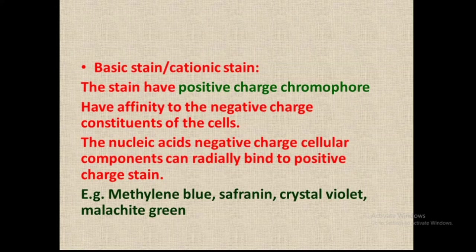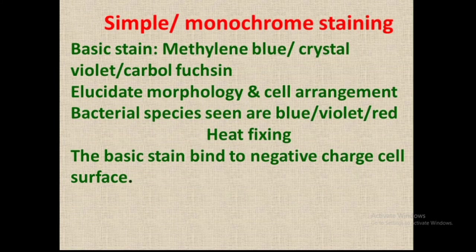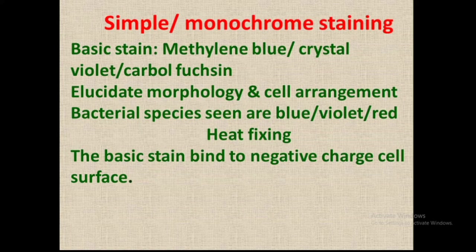Now let us see the types of staining. First is simple staining, also known as monochrome staining. This technique is useful to observe the morphology and cell arrangement of microorganisms. The basic stain — a positive charge stain — is used in simple or monochrome staining. Examples of basic stains used include methylene blue, crystal violet, and carbol fuchsin.